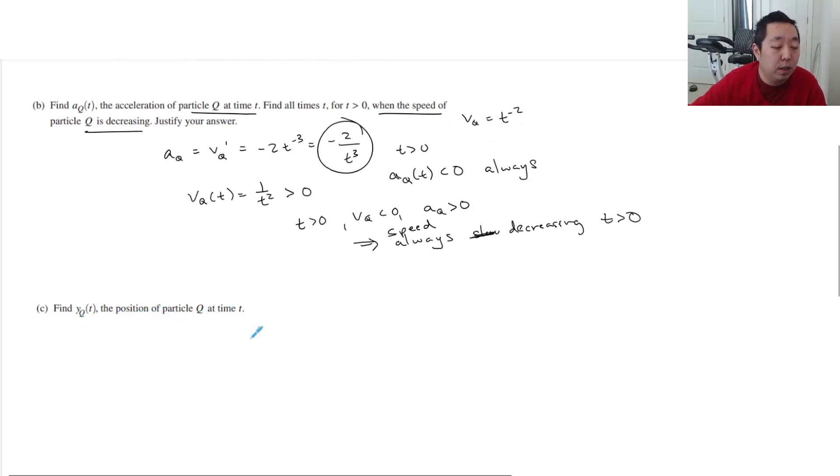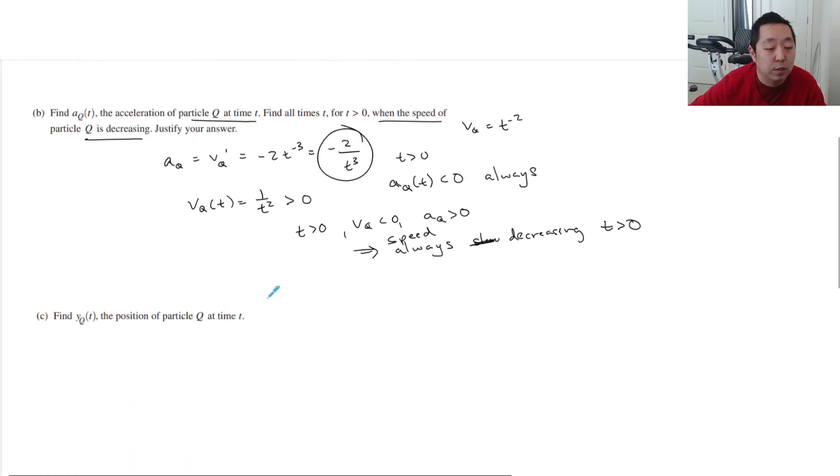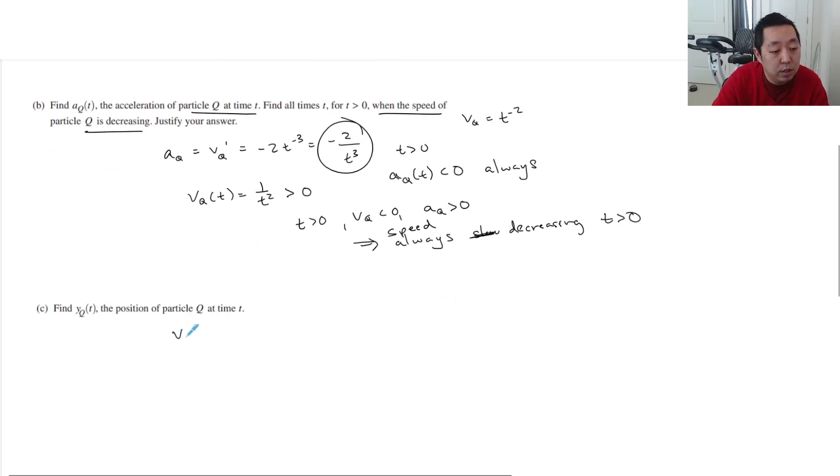Find the position of particle at time t. So you have Yq. So you want to find Yq as a function of time. So we know Vq is equal to 1 over t squared. That means Yq is the antiderivative of Vq, which is integral of t to the negative 2 dt. And that's going to be power rule of t to the negative 1 over negative 1 plus c. That's negative 1 over t plus c.